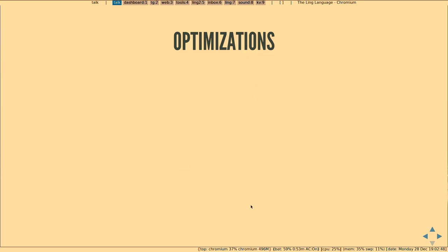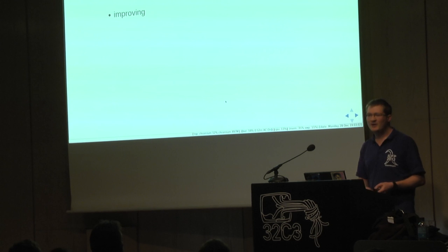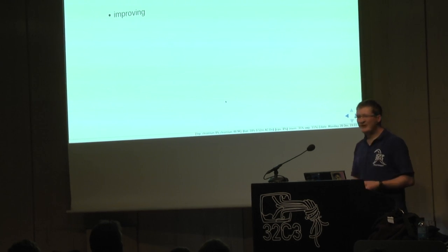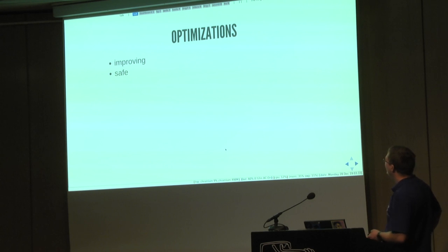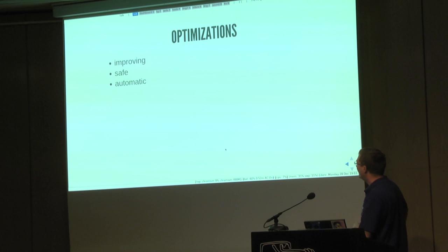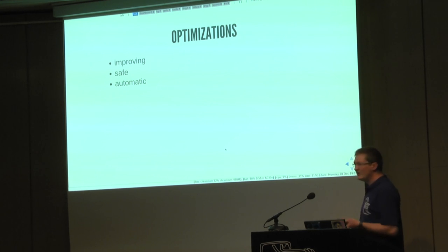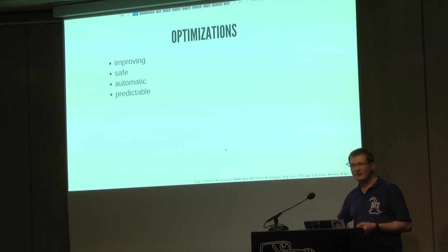As an introduction, let's speak of optimizations. What do we want about optimizations of a program? They could be manually done by the programmer or done automatically by the compiler. We want those optimizations to be improving the program for performance. This is the first requirement, but it's also very difficult to guarantee because systems are so complex today that you might be removing some lines of code and still your program is slower. But at least, optimizations should be safe — you should not turn a correct program into an incorrect program. It's better if optimizations are automatic, and they should be predictable by the programmer when they apply and when they don't.